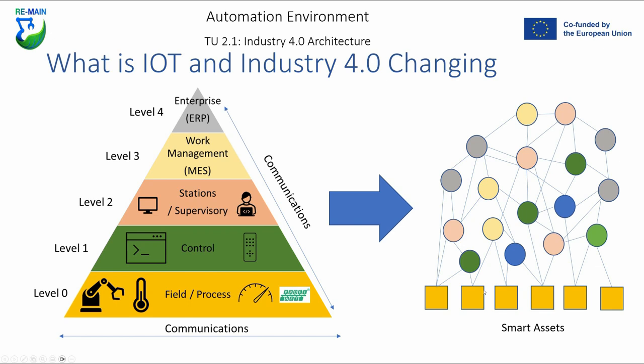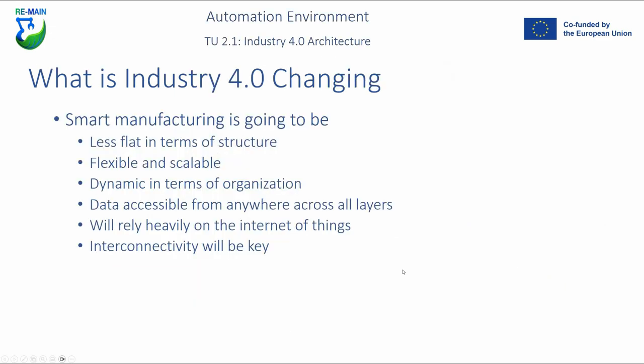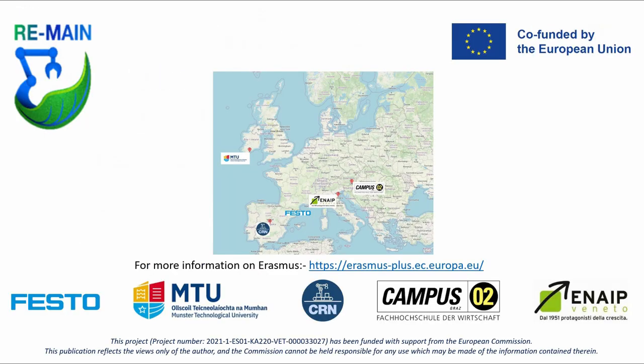The technologies and challenges discussed previously need to be met, and one of the main challenges around cybersecurity also needs to be addressed. Industry 4.0 is going to make manufacturing smarter, less flat in structure, more flexible, and more scalable. It will allow more dynamic manufacturing processes and capabilities across the whole organization. Your data will be accessible across all layers, allowing utilization of manufacturing data that may not currently be utilized — feeding into the whole theory of big data. We will rely heavily on the Internet of Things, and interconnectivity between devices and between layers is going to be key.